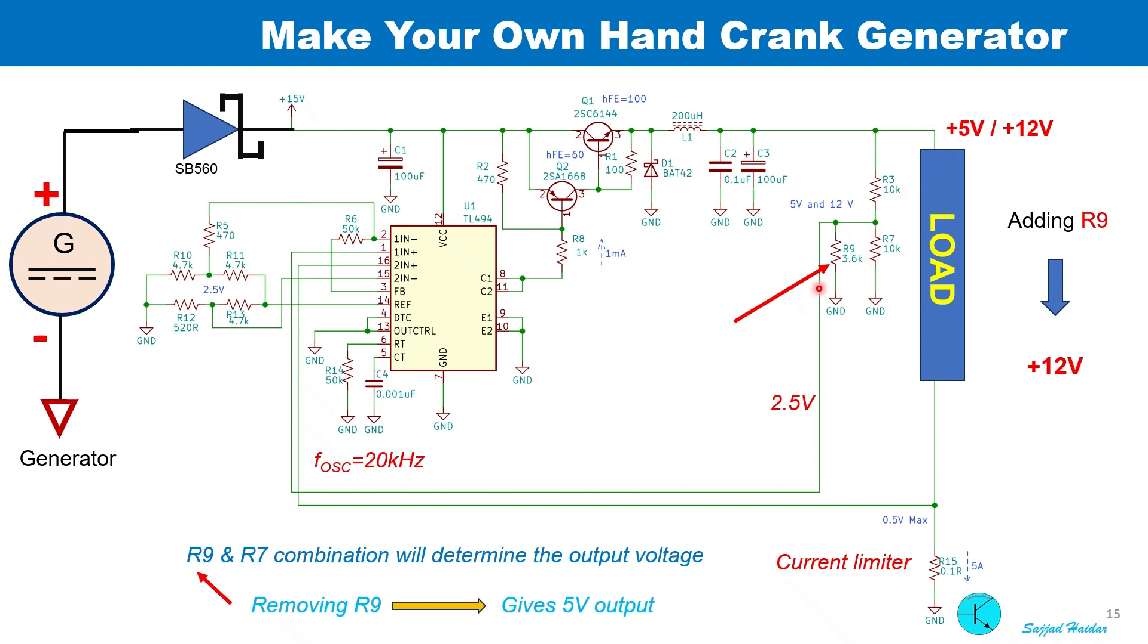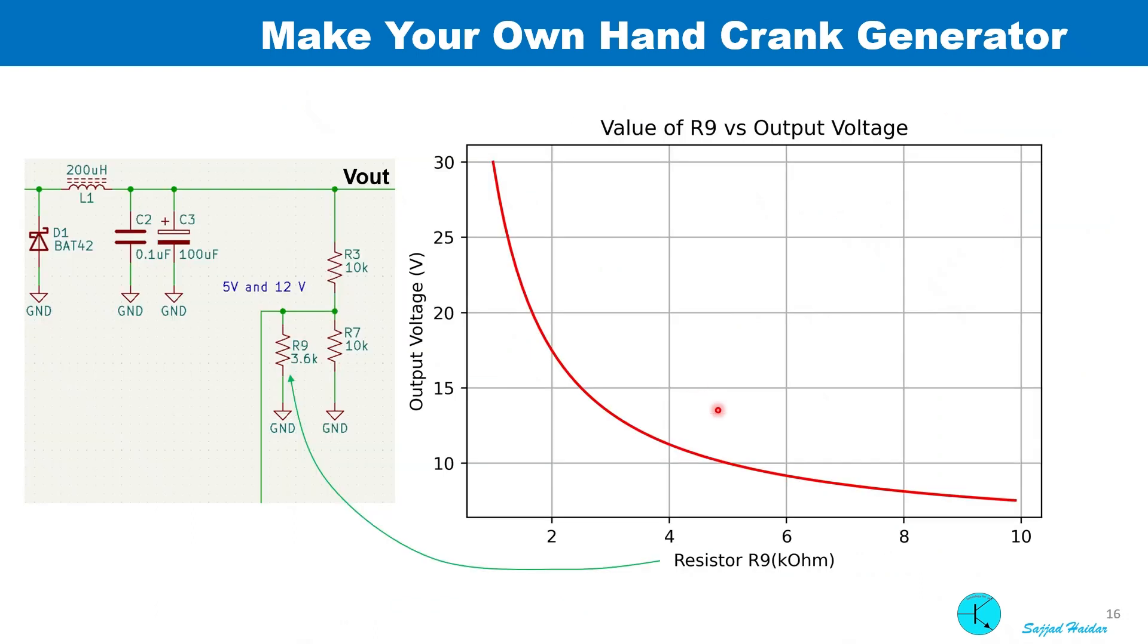Addition of R9 gives 12 volts at the output. This slide shows how the output voltage varies with the value of the resistor R9.